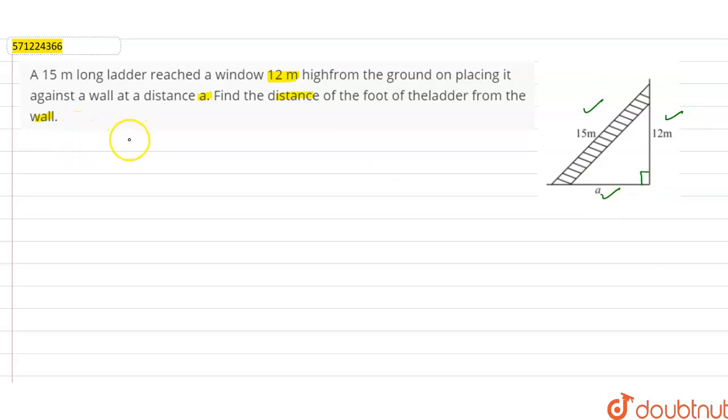The Pythagorean theorem says that the hypotenuse square is equal to perpendicular square plus base square. So here in this case, the hypotenuse of our triangle is 15.